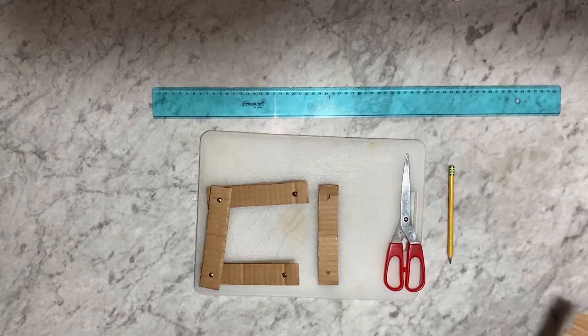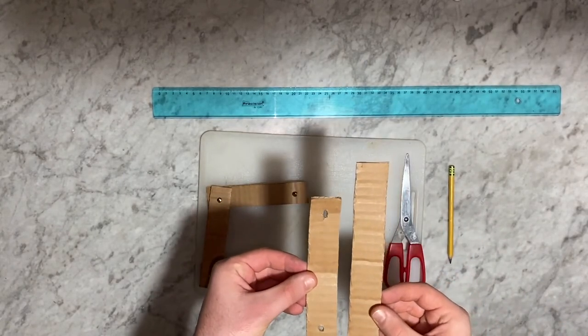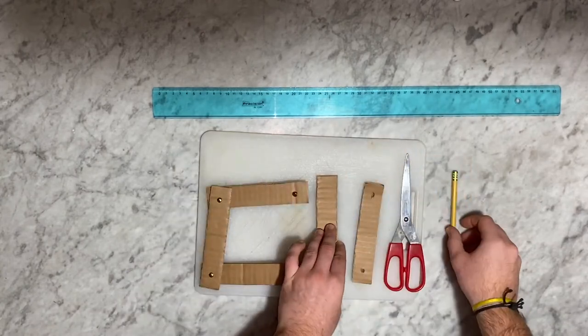To obtain a greater movement, we draw a rectangle 3 cm longer, making it 18 cm tall. We cut it out and pierce it.